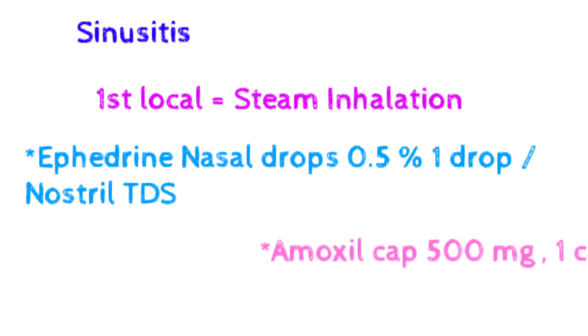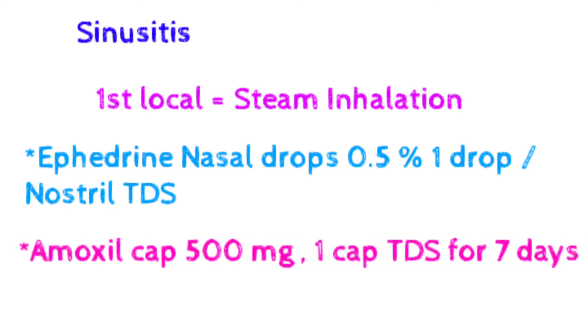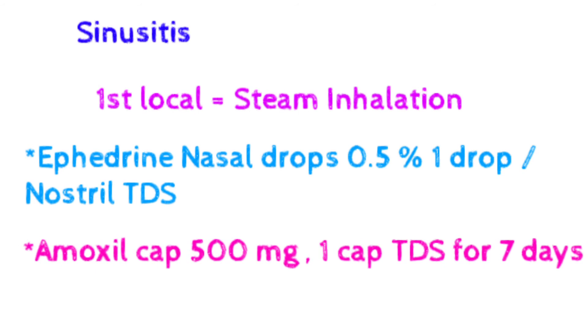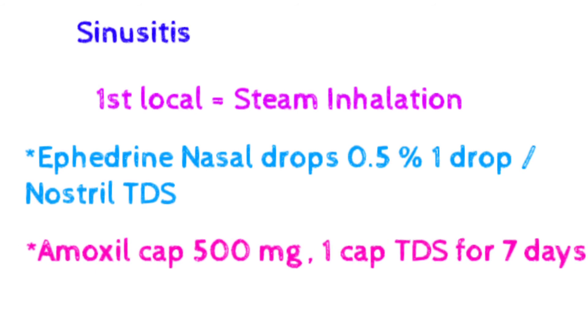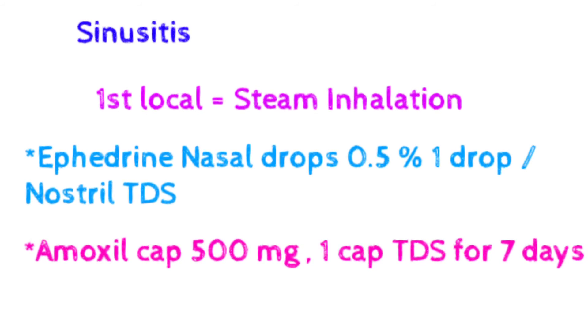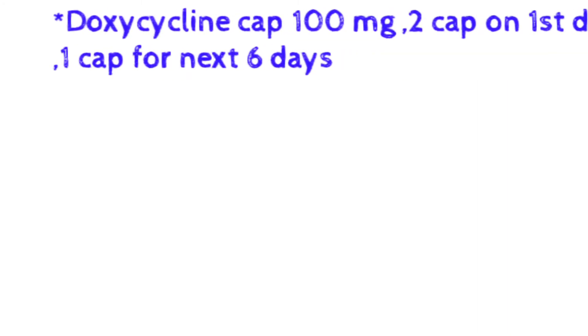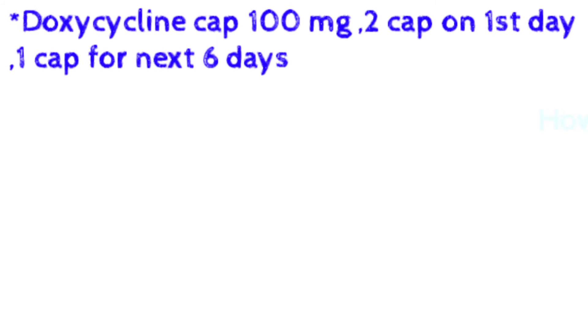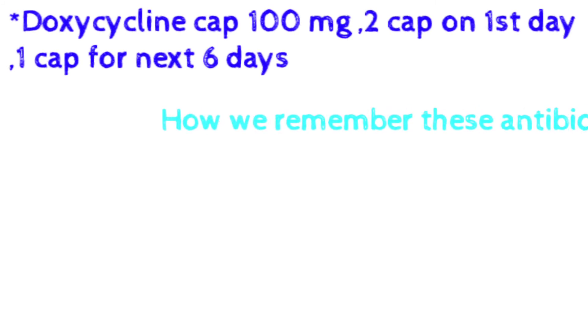The second drug for sinusitis is amoxil capsule 500 mg, one capsule at one time, TDS for seven days. The third drug is doxycycline — capsule 100 mg, two capsules on the first day, then one capsule per day for the next six days. So on the first day we give two capsules, then one capsule for the next six days.